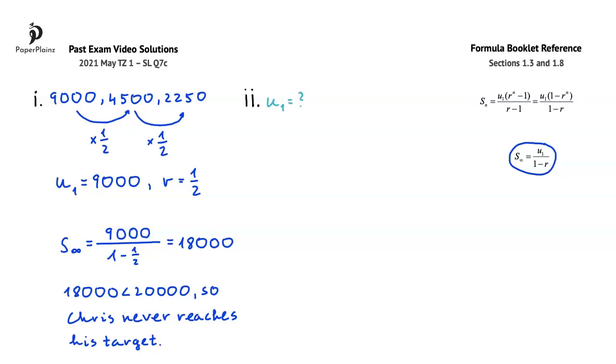The target is 20,000 dollars, which means that the sum of the first 5 terms, in other words s5, is equal to 20,000. As we discovered earlier, the common ratio is 1 half.